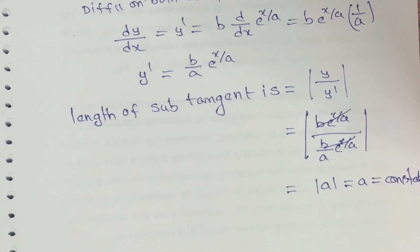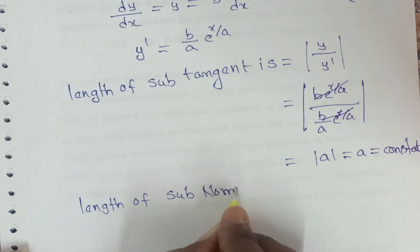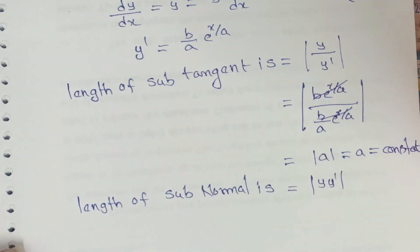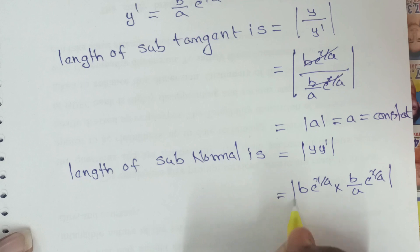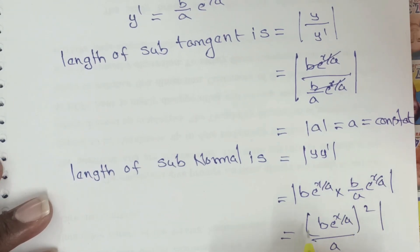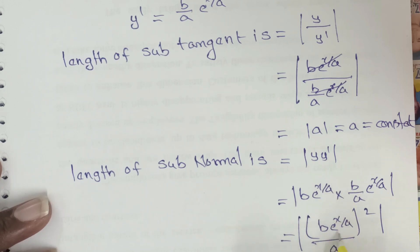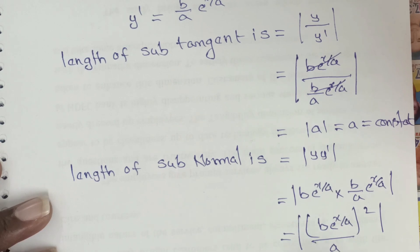For the length of subnormal, it equals |y*y'|, which is the modulus of [b*e^(x/a)]² / a. Since b*e^(x/a) equals y, this becomes |y²/a|, which equals y²/a. Therefore, the length of subnormal equals y²/a.